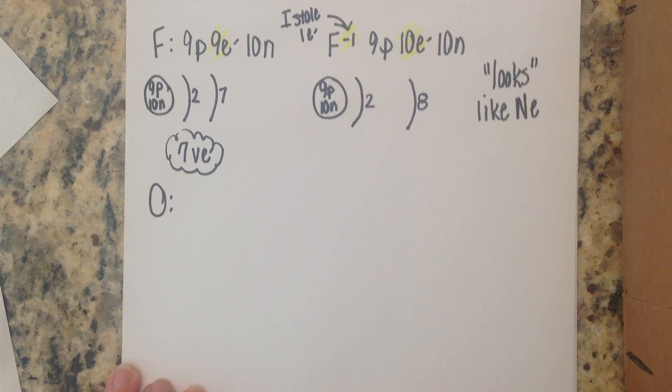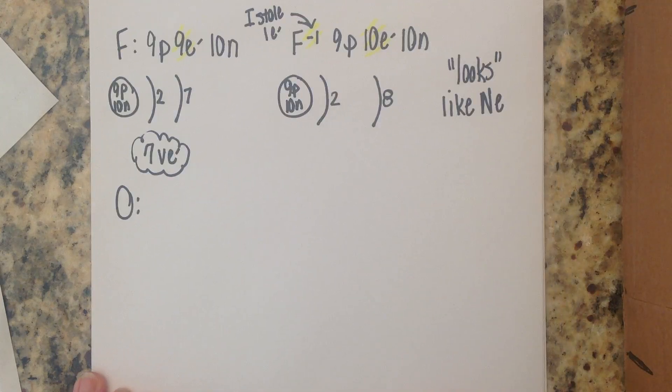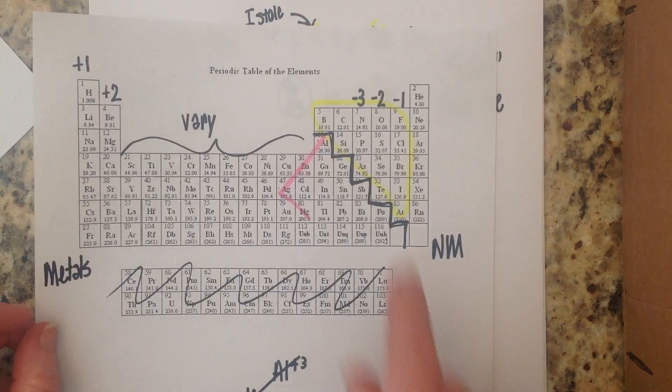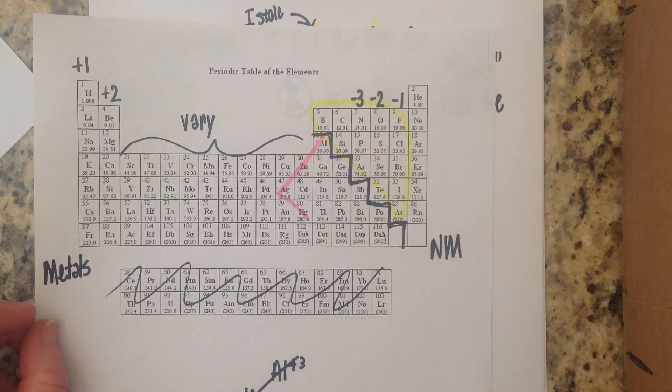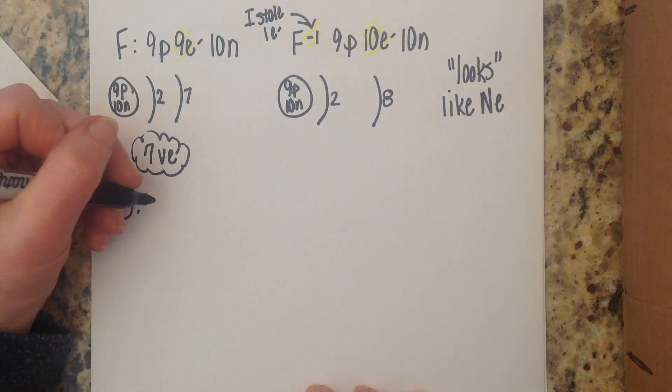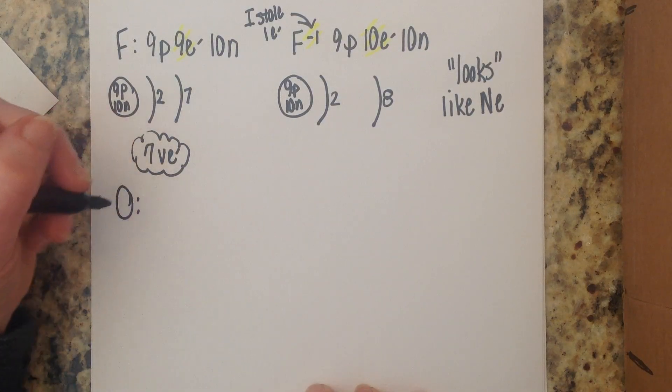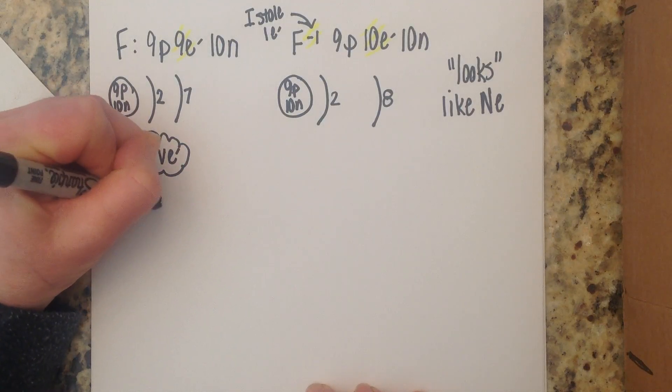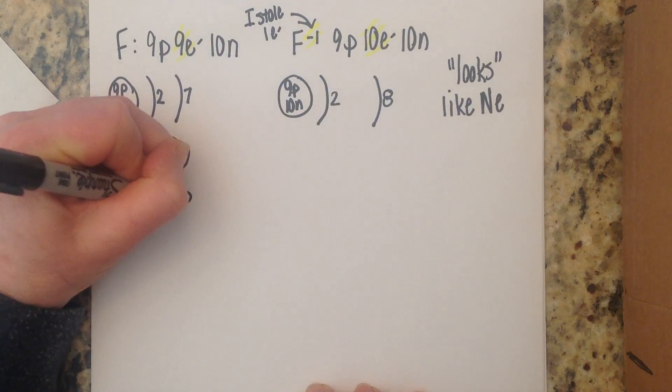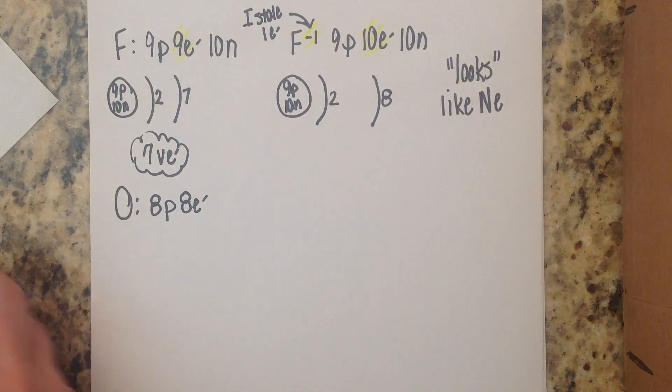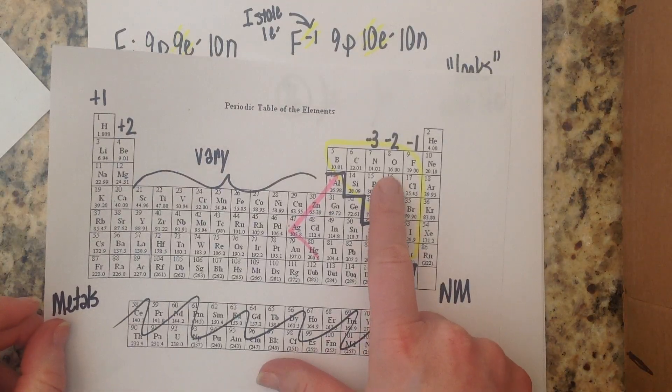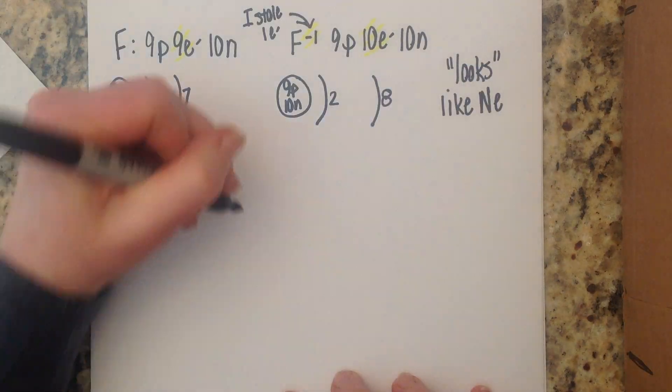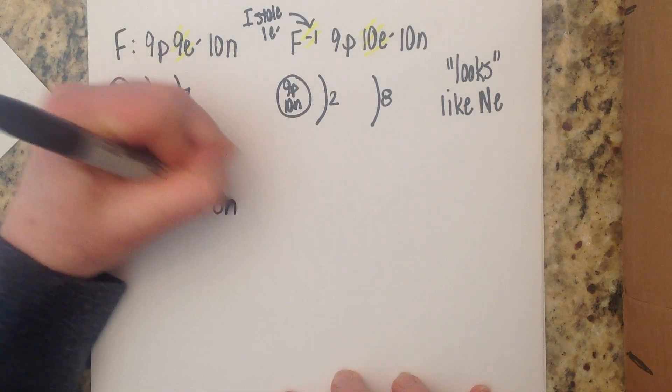So let's look at one more example of this and we're going to look at oxygen now. Oxygen is located right here actually fluorine's next door neighbor and oxygen is in the negative two column so oxygen has an atomic number of eight so that means we have eight protons eight electrons and the mass of oxygen is 16. 16 minus eight is eight neutrons.